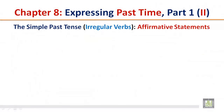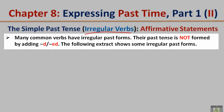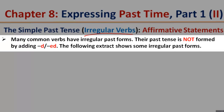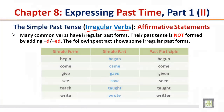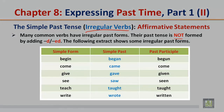The simple past tense — irregular verbs, affirmative statements. Many common verbs have irregular past forms. Their past tense is not formed by adding d or ed. The following extract shows some irregular past forms. The table shows: simple form, then simple past, then past participle.